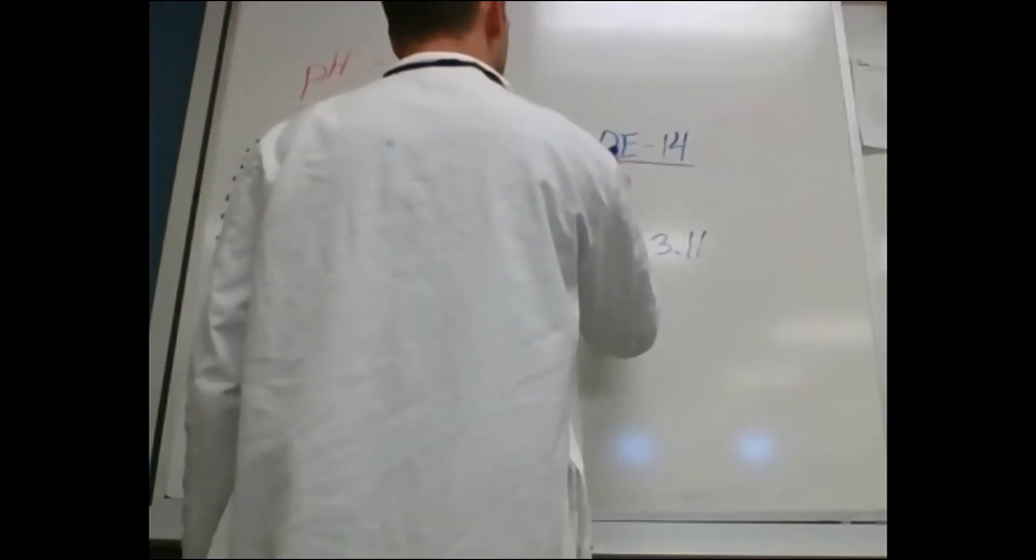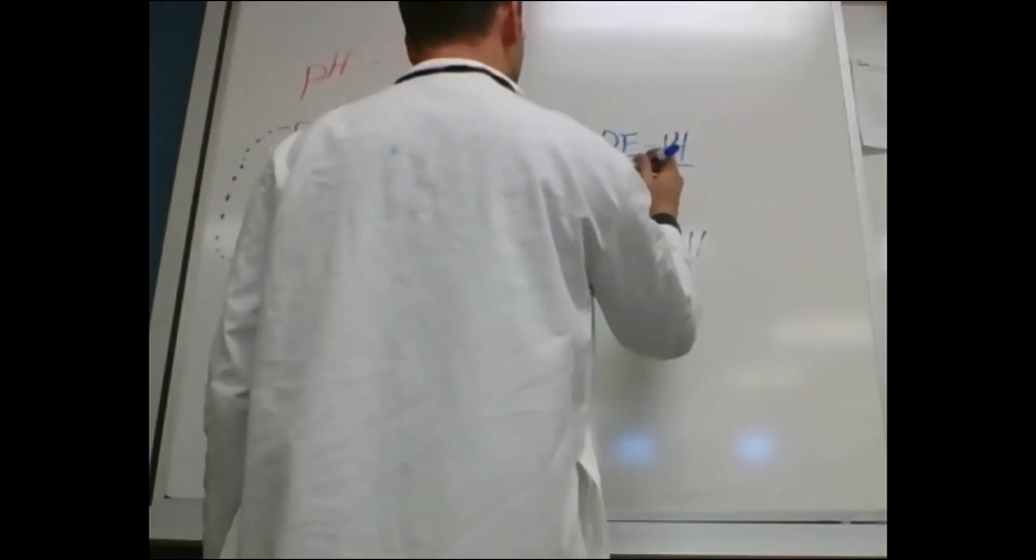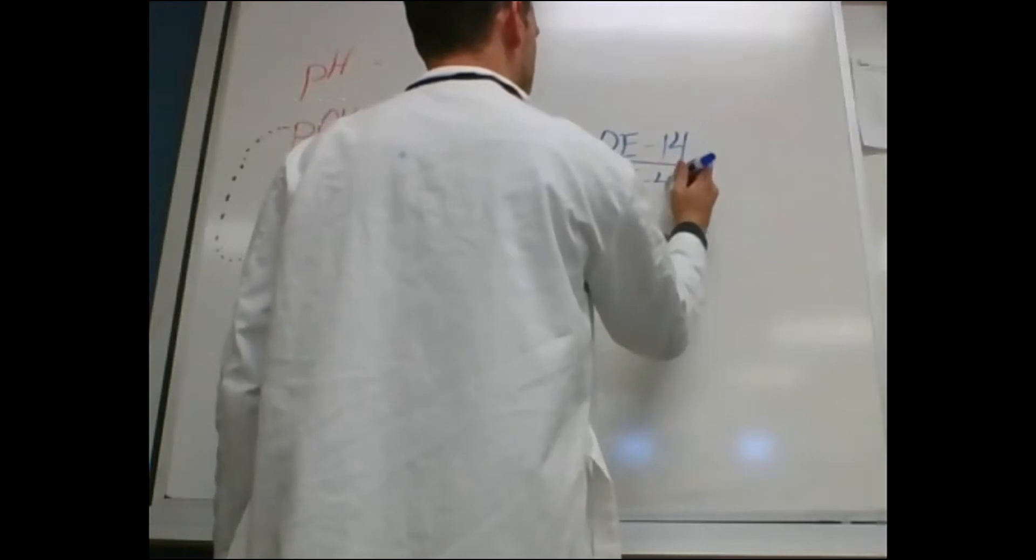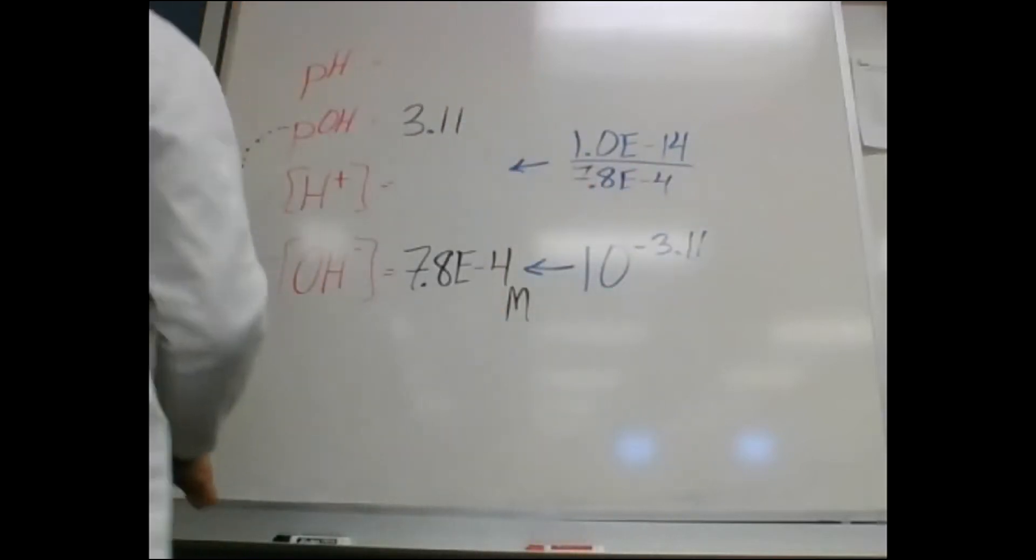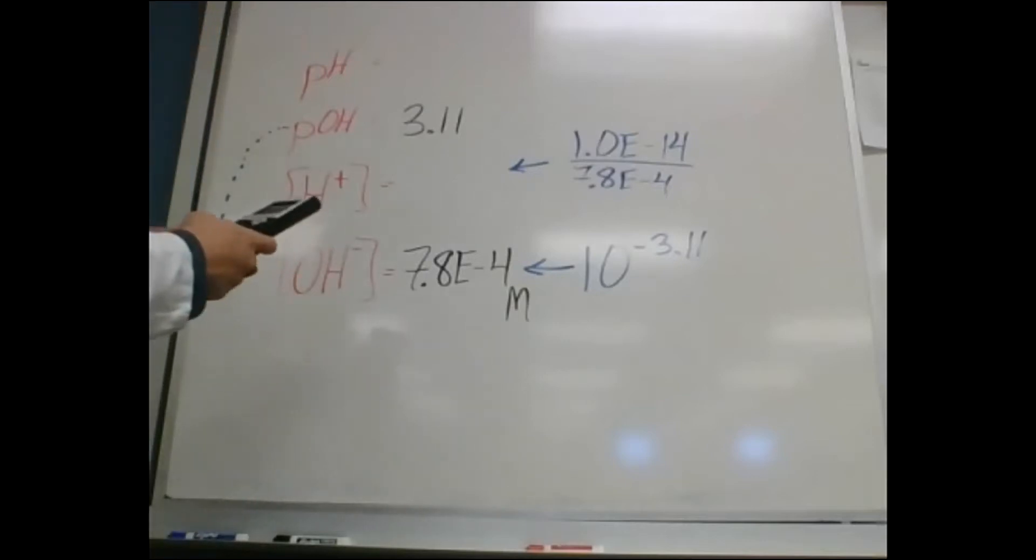And I'm going to divide that by the concentration that I now have, 7.8 E negative 4, and it'll give me the other concentration. So 1 E negative 14 divided by 7.8 E negative 4 to two sig figs looks like it's 1.3 E negative 11.